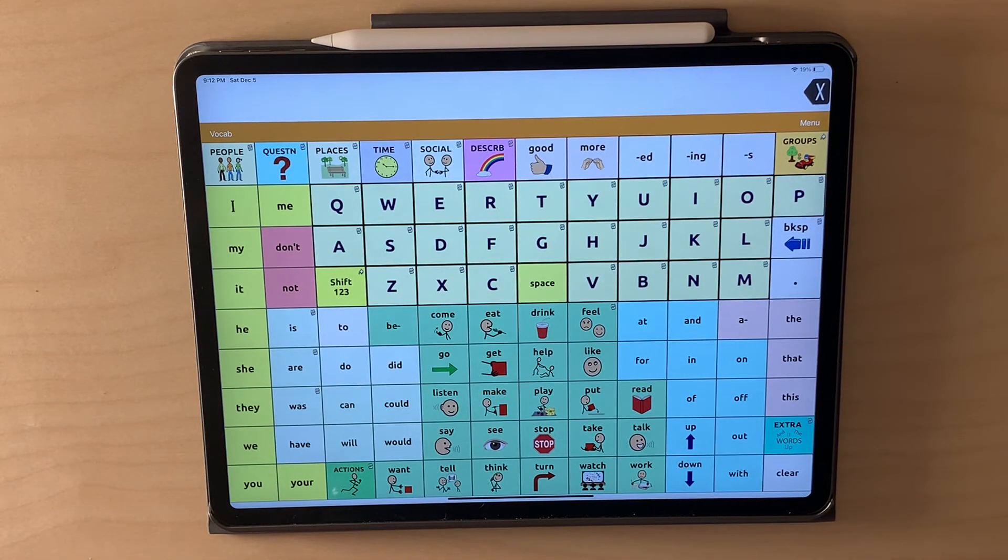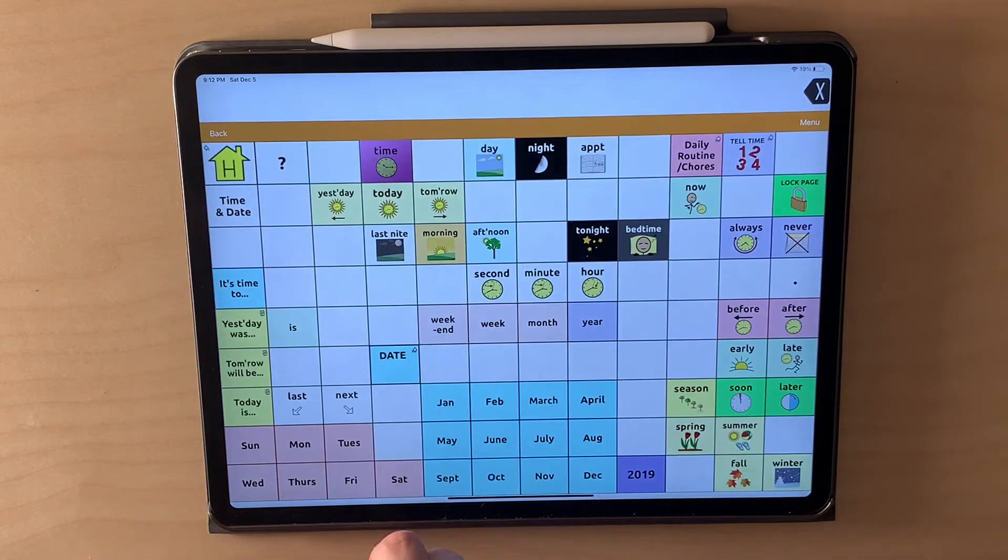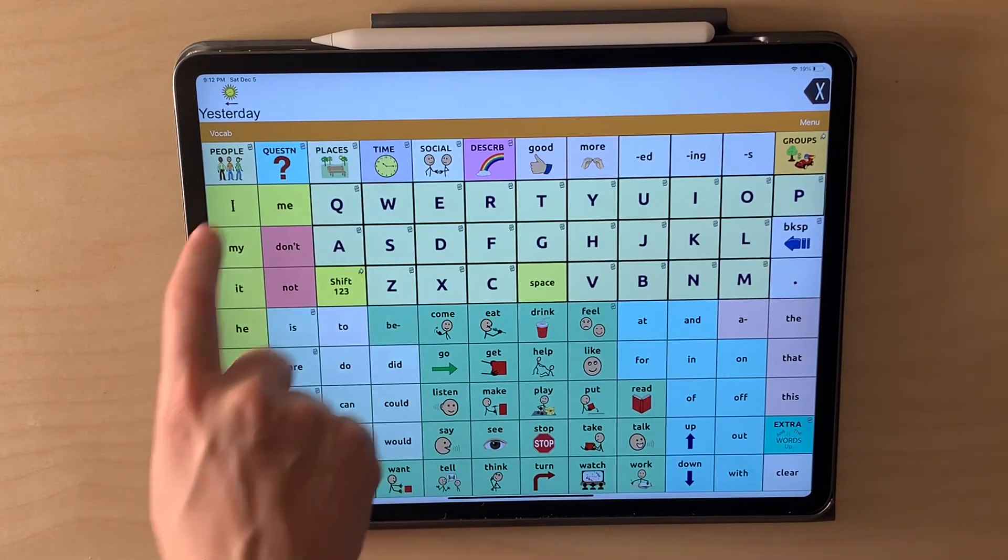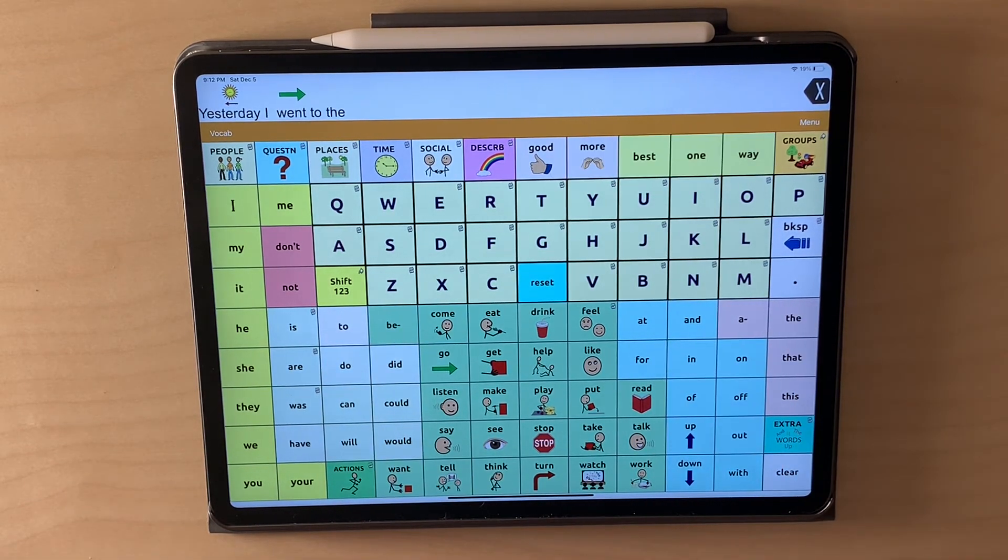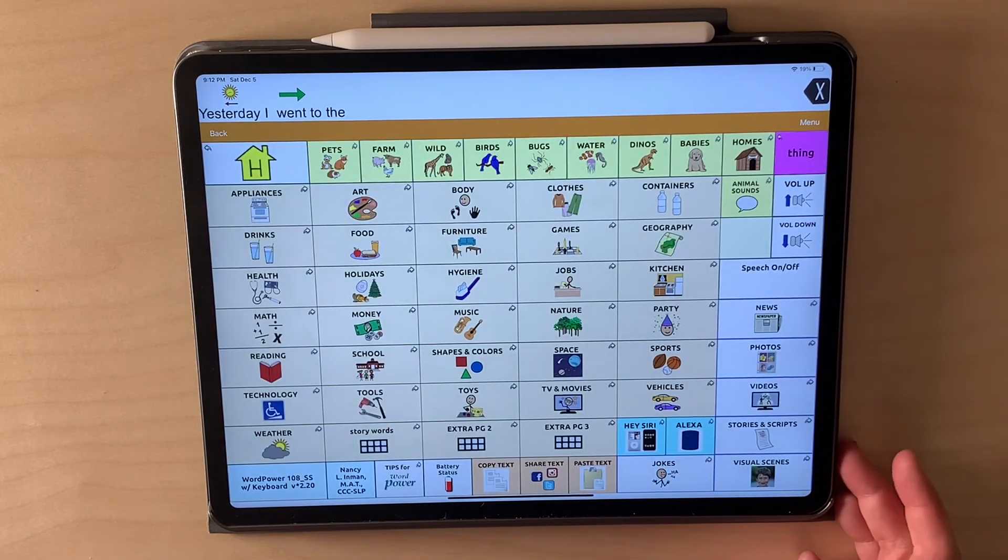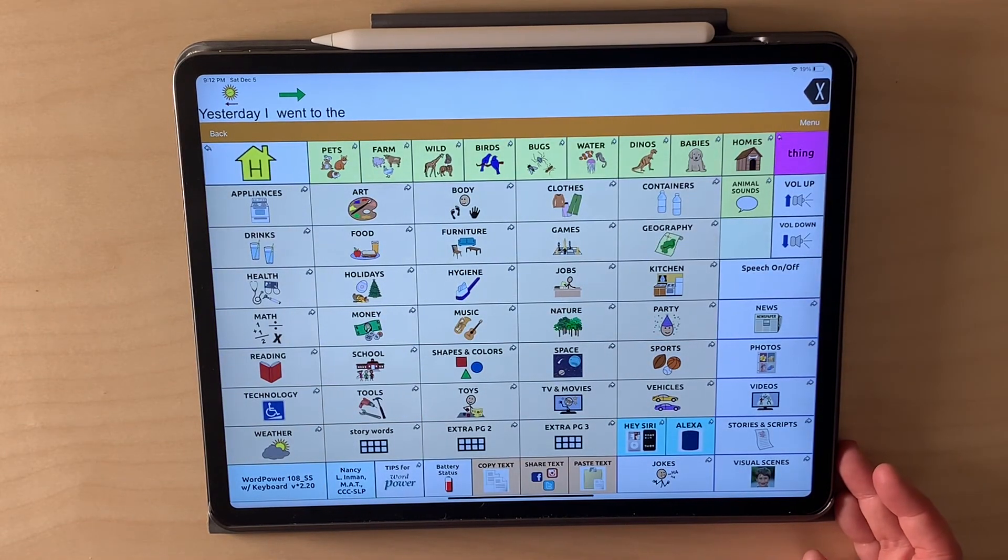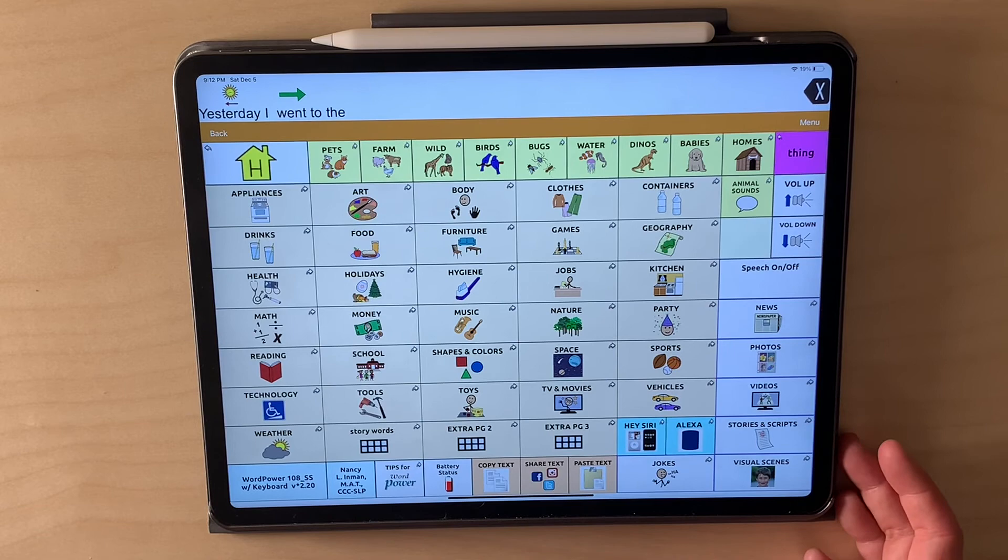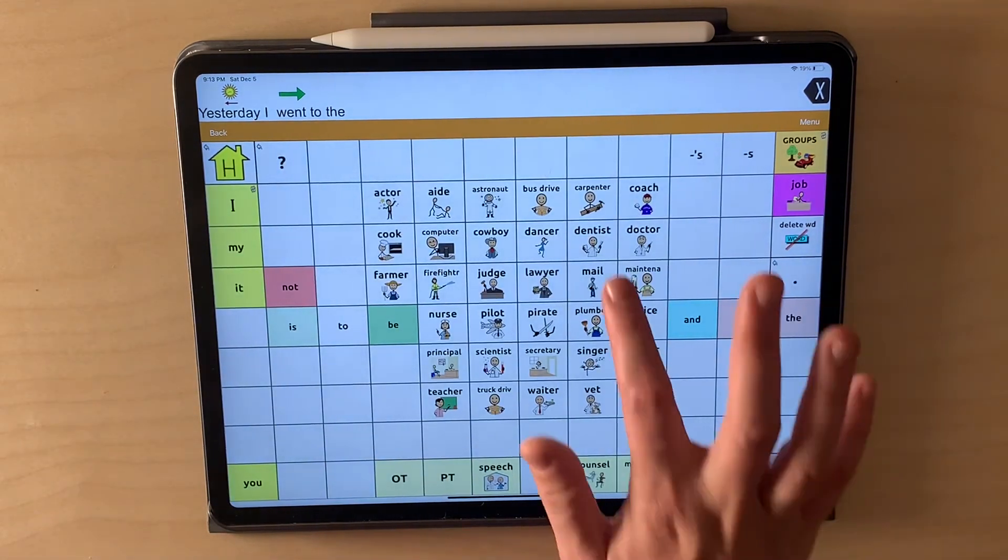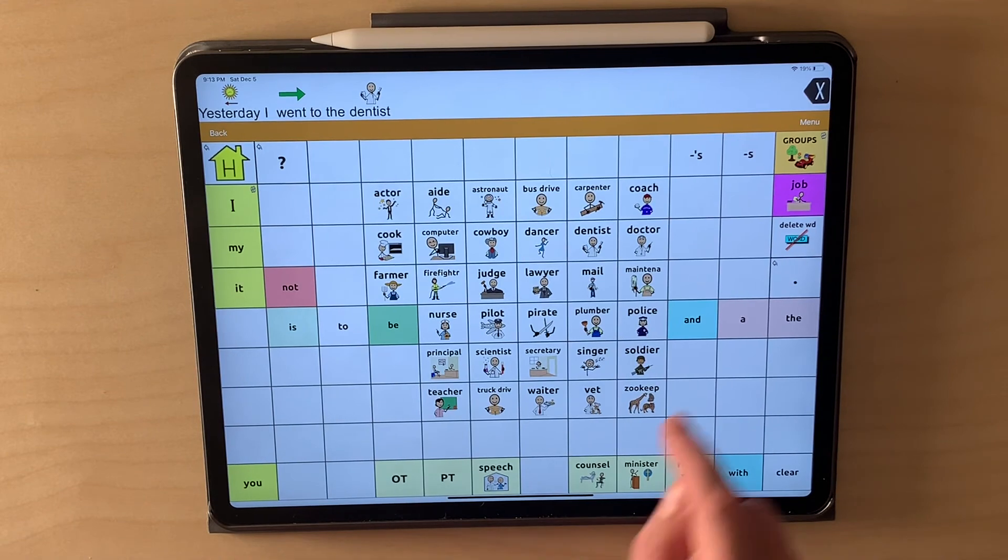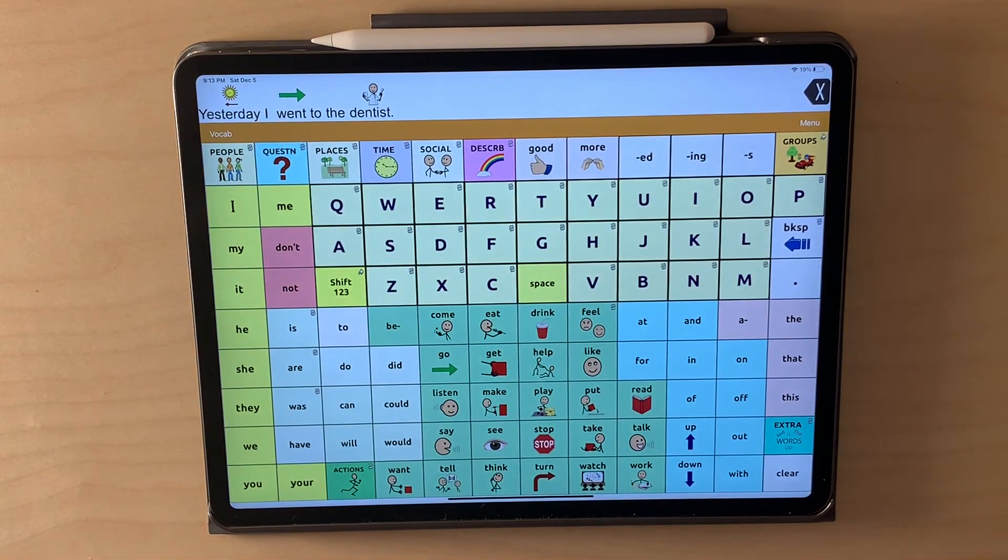Maybe we want to talk about what happened yesterday. We could say yesterday. I. And then I want to say go. Past tense. Went. To the. And then maybe I'll do something different. Yesterday I went to the dentist.